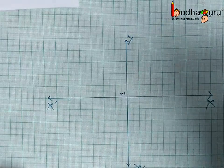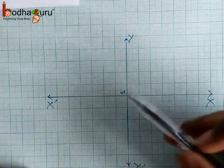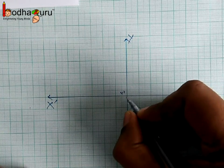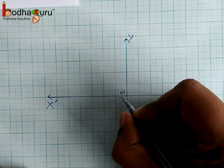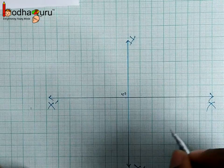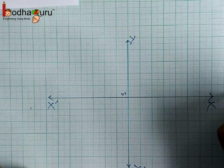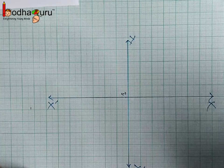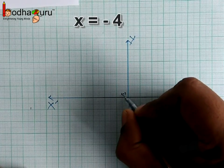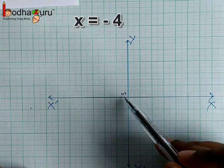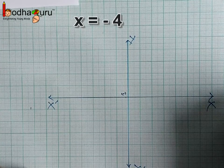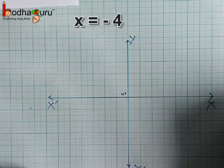Now suppose we are given a point on the graph and need to find its coordinates. First we find x by calculating its distance from the y-axis. This point is 4 units from the y-axis and it is to the left of the y-axis, so x equals minus 4. Remember: any point to the right of the y-axis has a positive x value, and any point to the left has a negative x value.